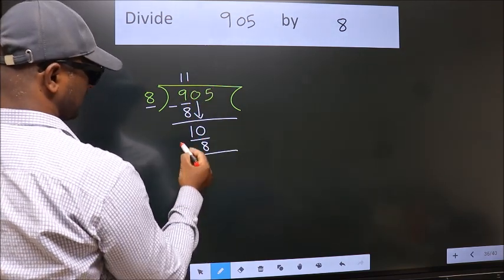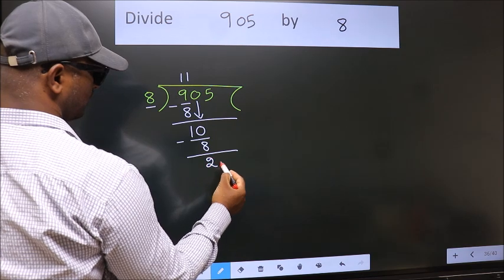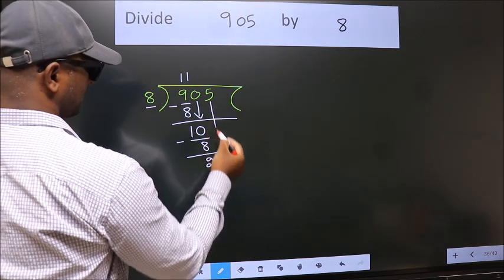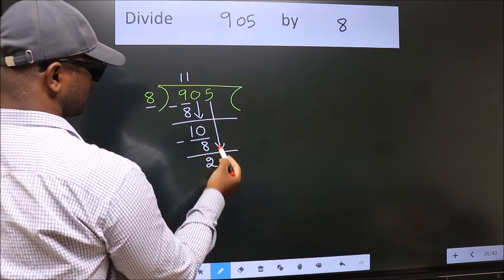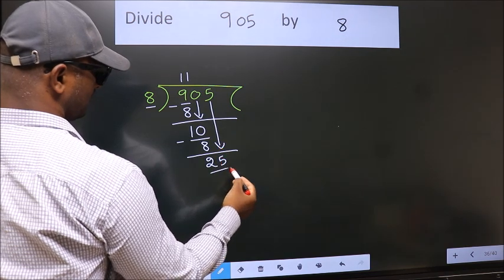Now, we subtract. We get 2. After this, bring down the beside number. So, 5 down. So, 25.